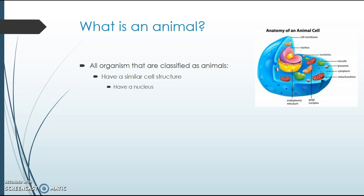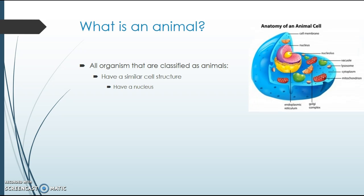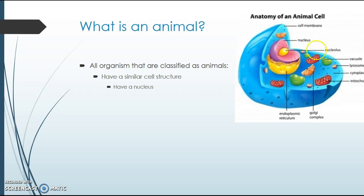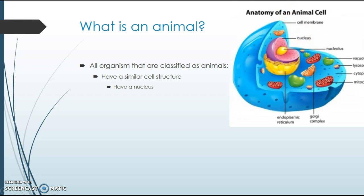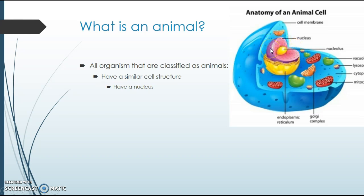Number one: they have a nucleus. A nucleus is this purple thing in the middle. It carries out the instructions — it tells the cell what to do — and animal cells have this. What's missing is there's no cell wall.